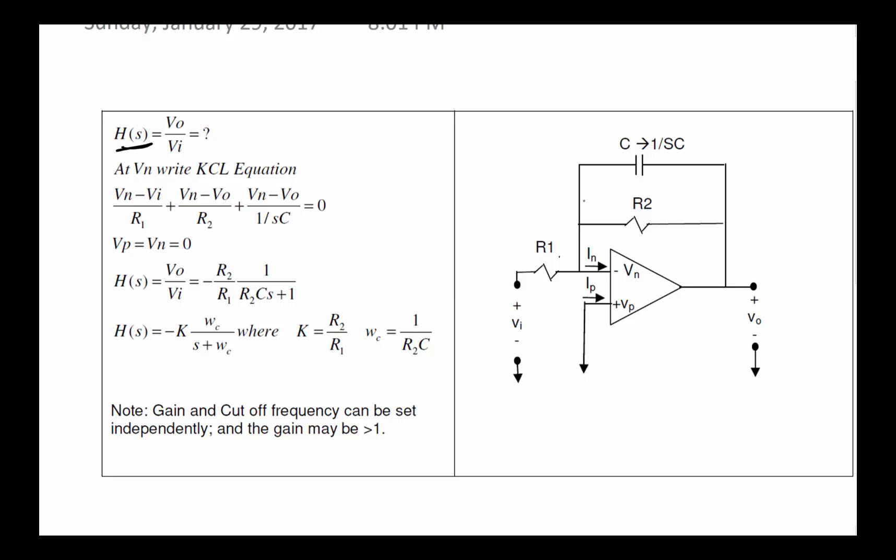The first thing is we need to take the components into the phasor domain. R1 and R2 impedances would be R1 and R2. For C the impedance would be 1 over j*Omega*C, and as we've said earlier, j*Omega is represented with an S, so 1 over S*C.